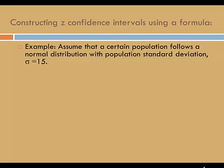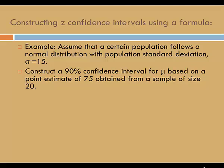Assume that a certain population follows a normal distribution with population standard deviation sigma of 15. Construct a 90% confidence interval for mu based on a point estimate of 75 obtained from a sample of size 20.